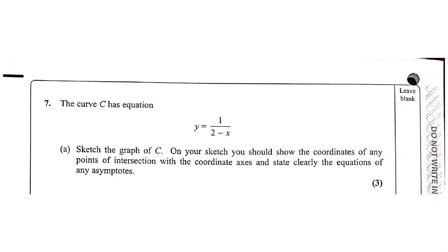Question number 7. The curve C has the equation y equals 1 upon 2 minus x. Part A: sketch the graph of C. On your sketch, you should show the coordinates of any point of intersection with the coordinate axes and state clearly the equations of any asymptotes. The question carries 3 marks.